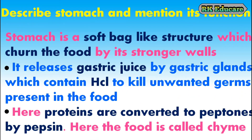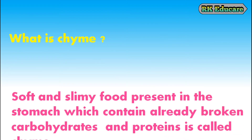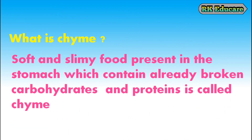Describe the stomach and mention its function. Stomach is a soft bag-like structure which churns the food by its stronger walls. It releases gastric juice by gastric glands which contain hydrochloric acid to kill unwanted germs present in the food. Here, proteins are converted to peptones by an enzyme called pepsin. The food in the stomach is called chyme — soft and slimy food present in the stomach which contains already broken carbohydrates and proteins.